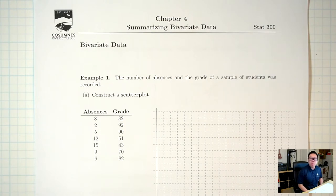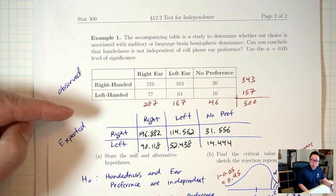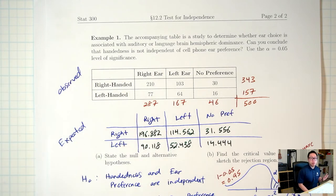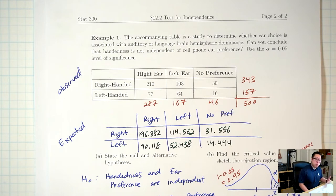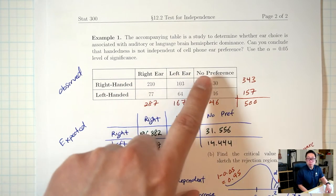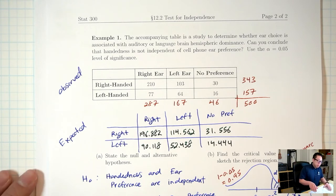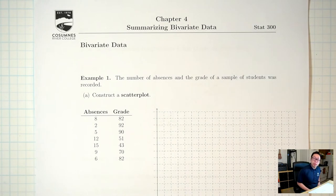Last time we talked about the test for independence, which is used to determine whether two variables are related. An example was whether handedness is related to cell phone ear preference — both qualitative variables answered with words. Today we're going to talk about how to determine whether two quantitative variables are related.